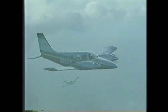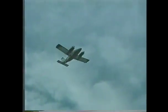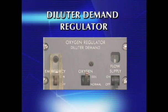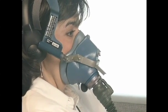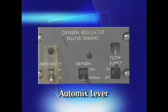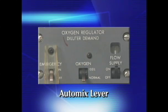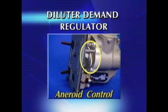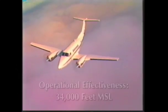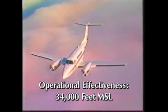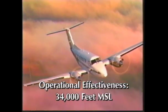The increase in operational altitudes of aircraft dictated improvements in oxygen regulators. To increase efficiency and keep the body physiologically safe at higher altitudes, the diluter demand regulator was developed. Diluter demand regulators furnish oxygen when the user inhales and incorporate an auto-mix lever, enabling the user to select either a mixture of cabin air and oxygen or 100% oxygen. In the normal oxygen setting, the regulator uses an aneroid control to automatically adjust the percentage of oxygen delivered, with operational effectiveness up to 34,000 feet MSL.